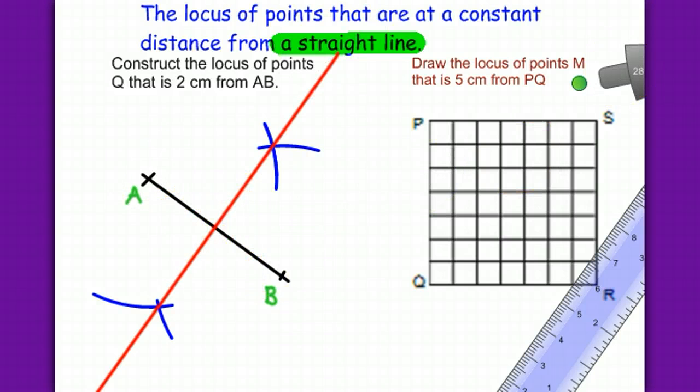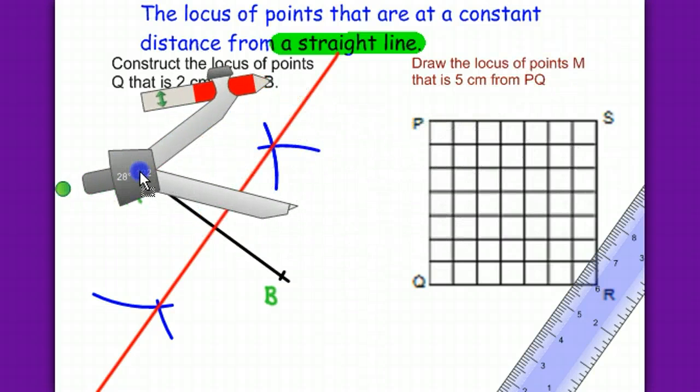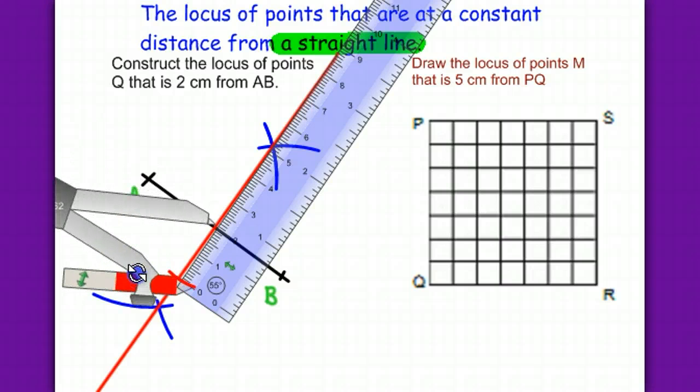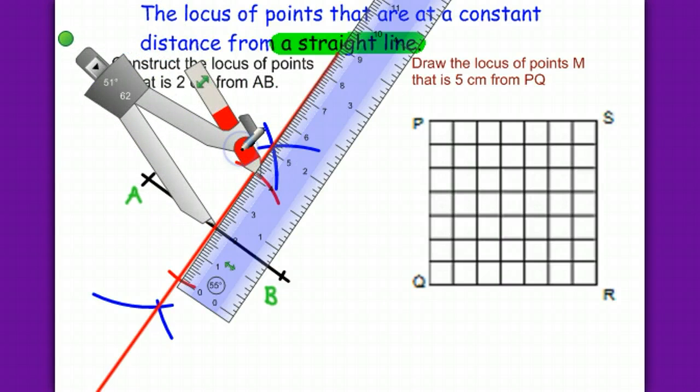Now again, we take the compass and we have to measure 2cm. This is 2cm, one 2cm curve here, and another 2cm curve on the other side.